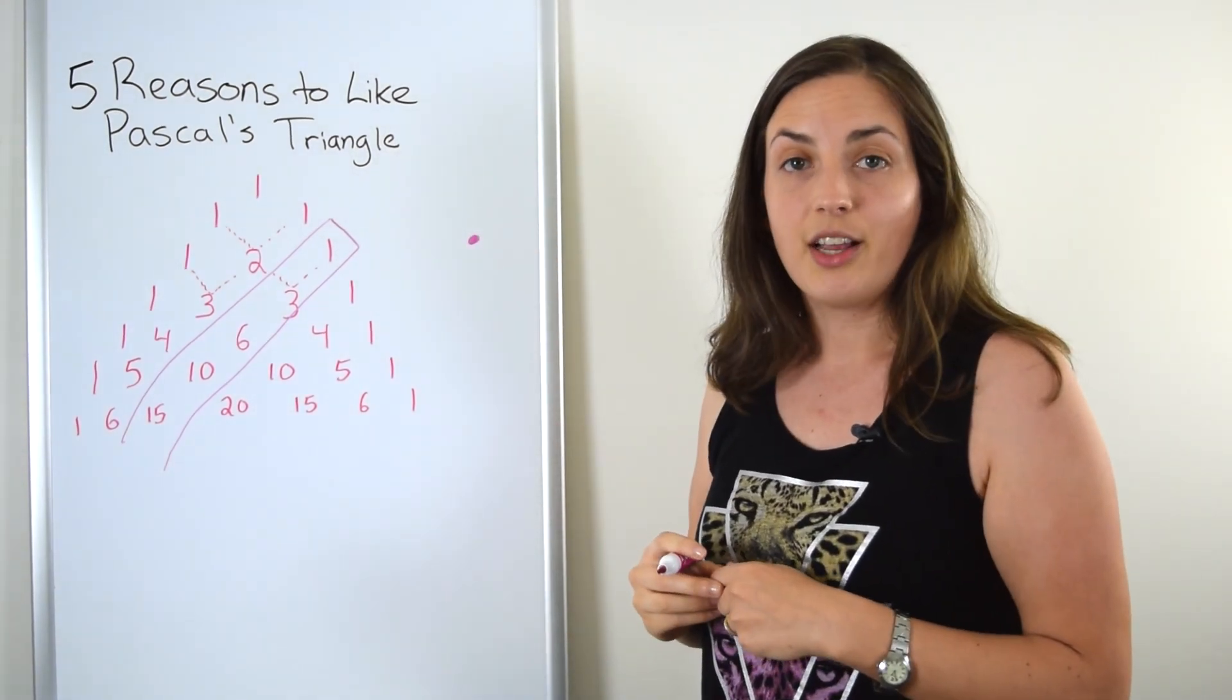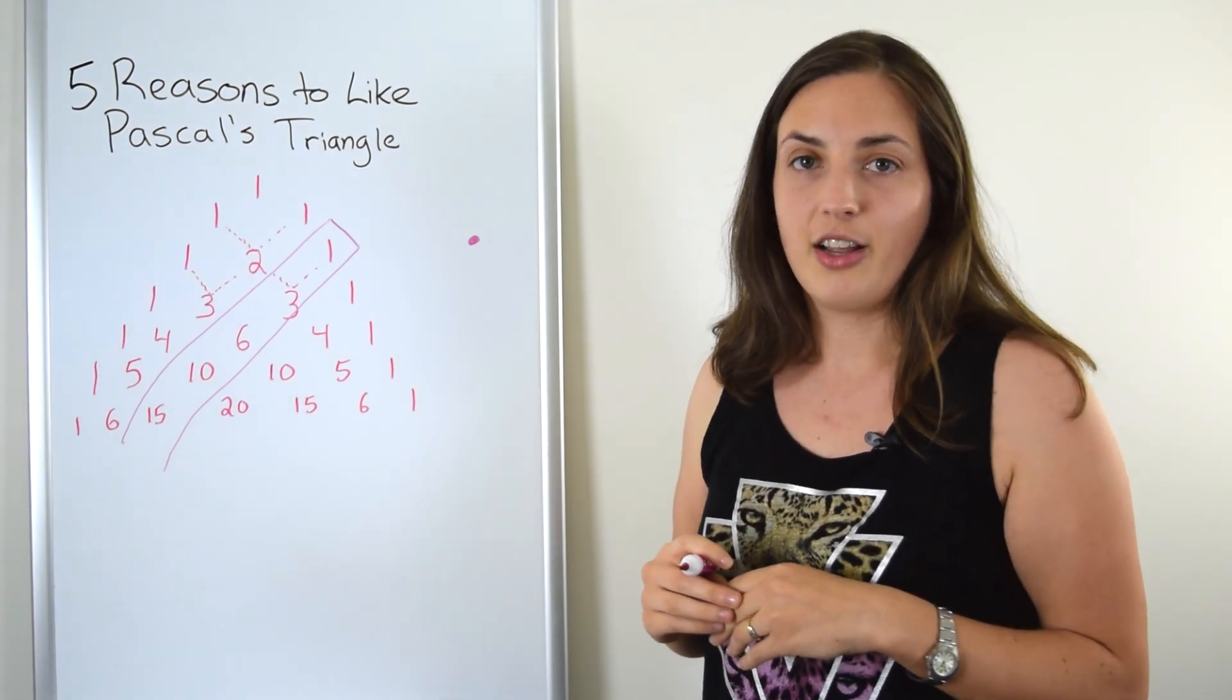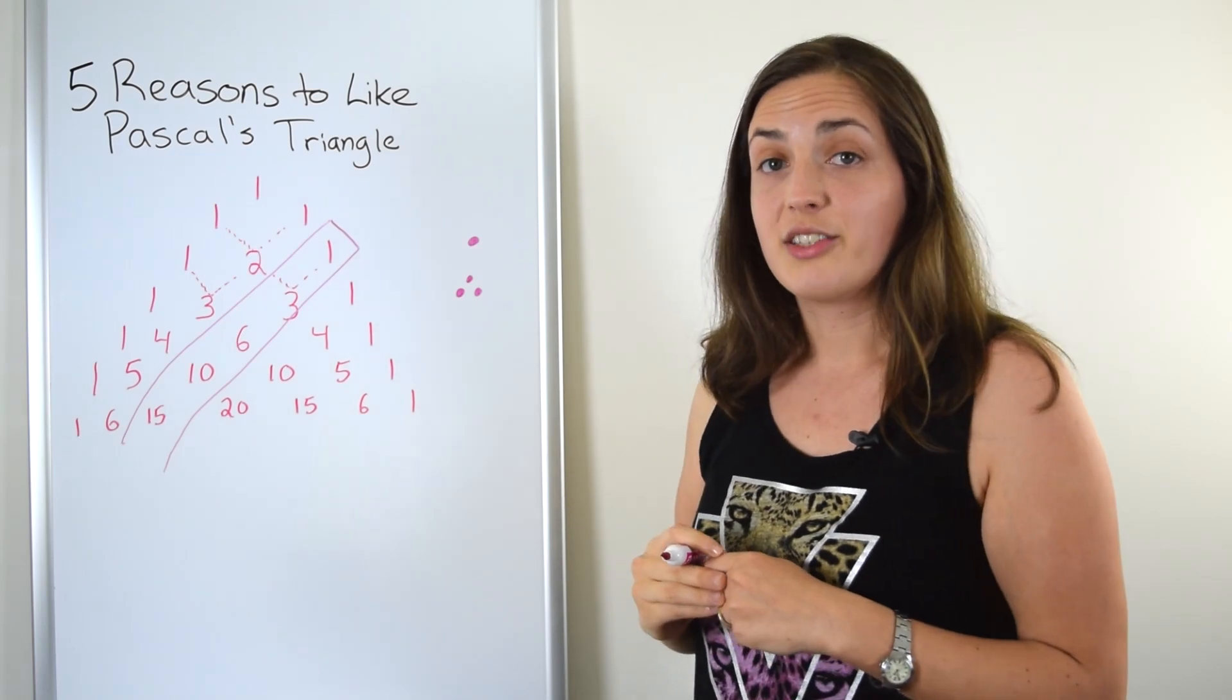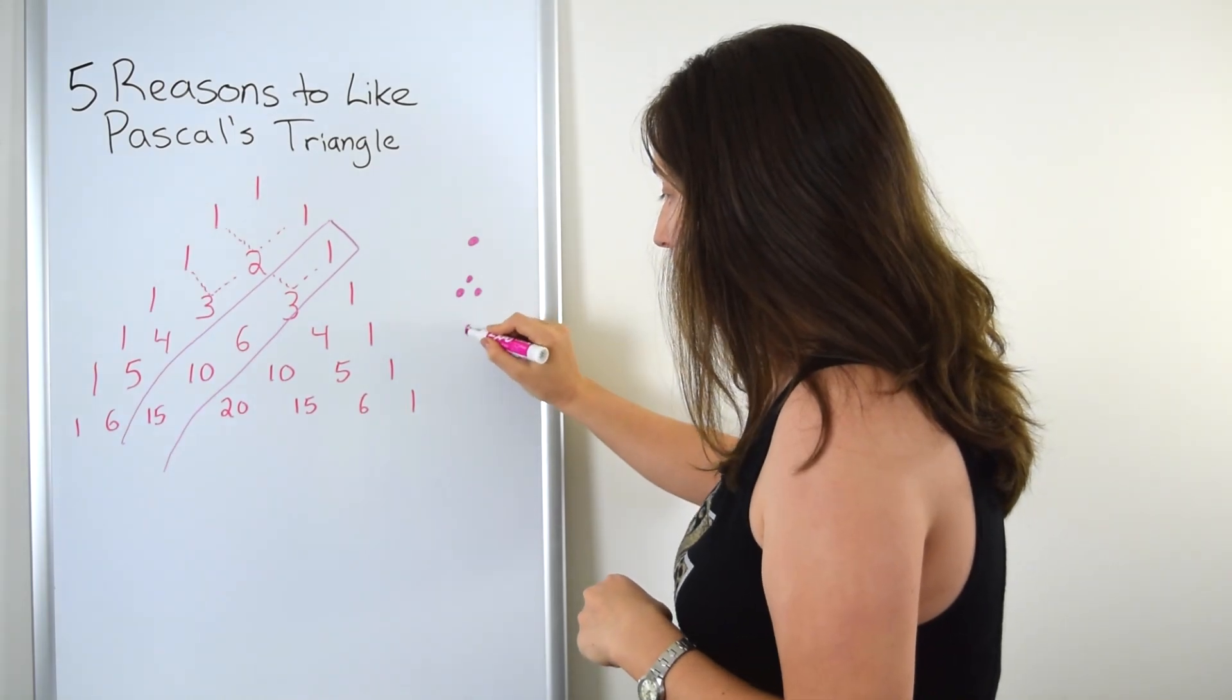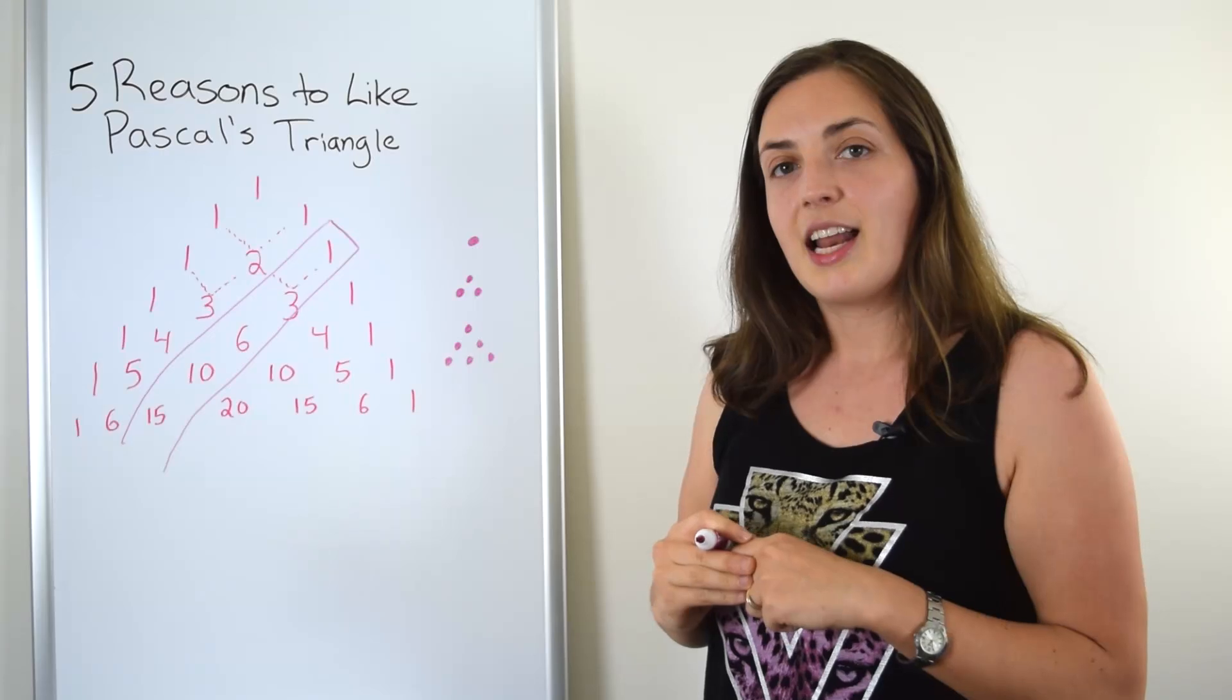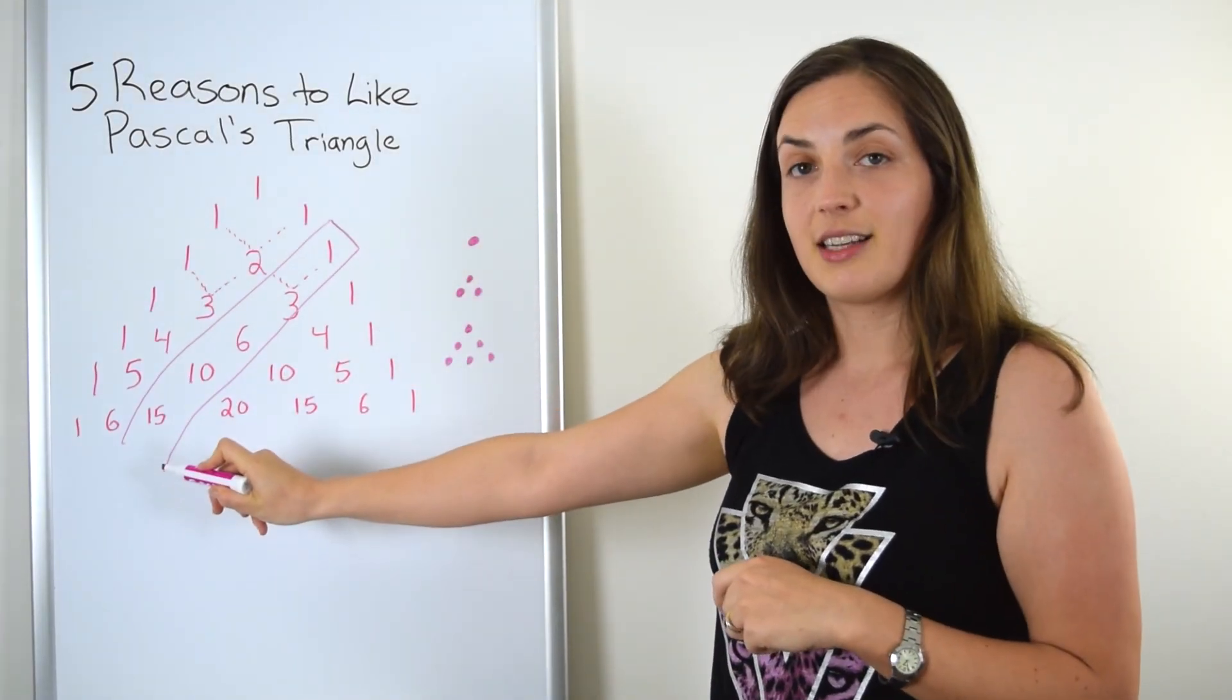One is a triangle number because you can represent one as a single dot, which is by itself a very small triangle. The next triangle number is three because it's the next biggest number that you can write in dots as a triangle. The next one is six, and if you notice, this is exactly what we're getting from the third diagonal of Pascal's triangle.